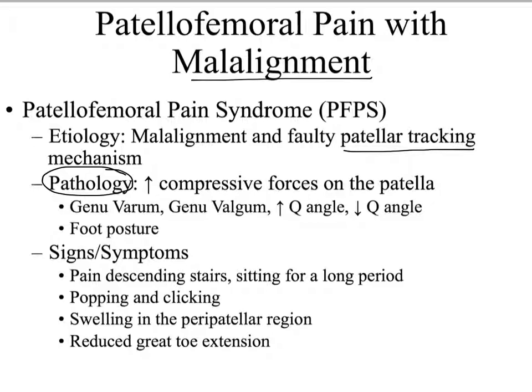When patellar tracking is altered, the first thing that happens is you have an increase in compressive forces on the patella. If that patella is gliding more laterally, you have increased compressive forces on the lateral side of the patella, which could lead to chondromalacia patella on that side. What we know about this pathology as it relates to malalignment is that it typically occurs somewhere within the kinetic chain.